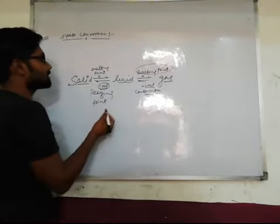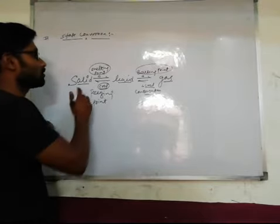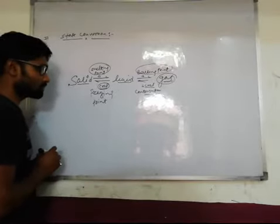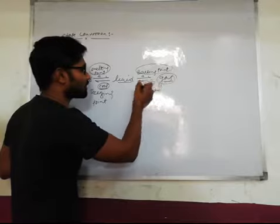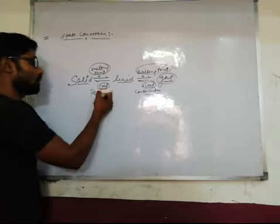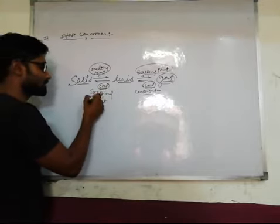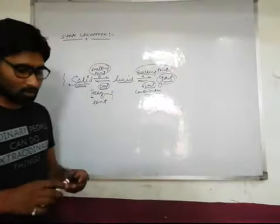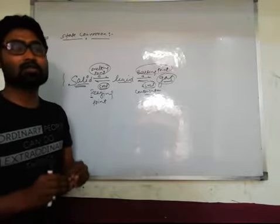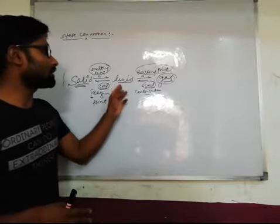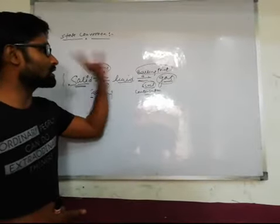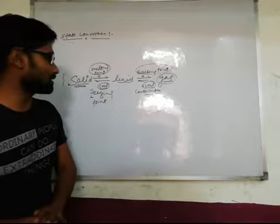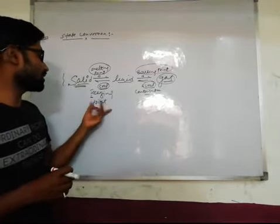So to summarize: solid to liquid change occurs at the melting point; liquid to gas change occurs at the boiling point. Gas to liquid change is called condensation. At constant temperature, liquid changes into solid — that process occurs at the freezing point. Clear?